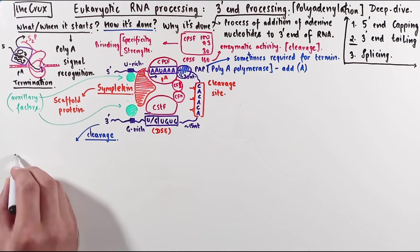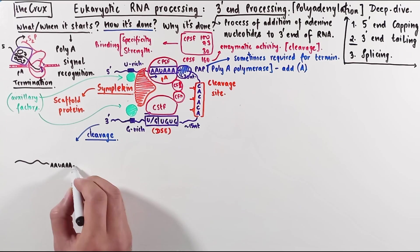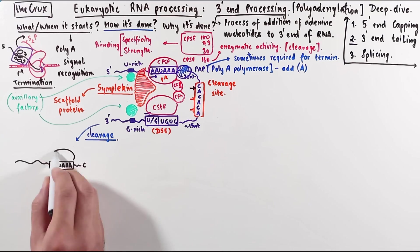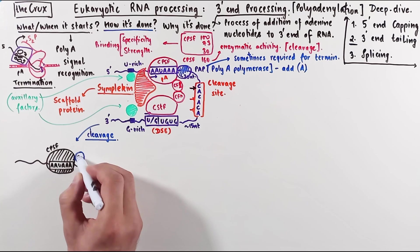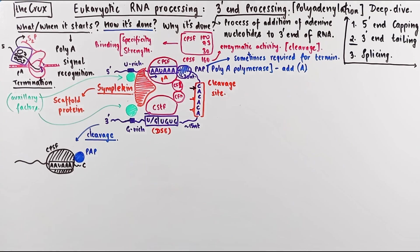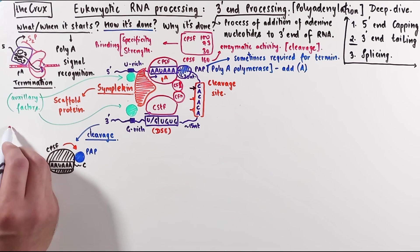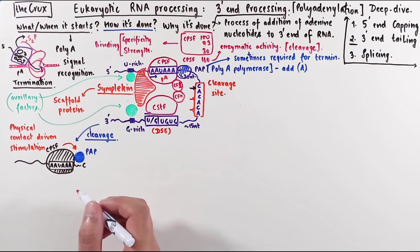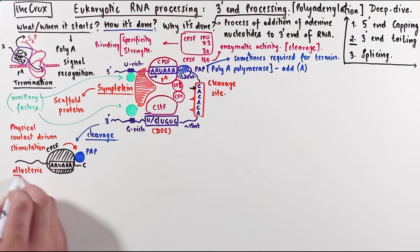So after the RNA is cleaved, the cytosine nucleotide is the last nucleotide left because the cut is made between the cytosine and the adenine. The CPSF is still bound to this AAUAAA sequence and the polyA polymerase remains attached to this bound CPSF. The CPSF now stimulates the polymerase activity of the PAP enzyme. This stimulation is driven by a physical contact from the CPSF to the PAP. This sort of physical stimulation is called an allosteric activation.